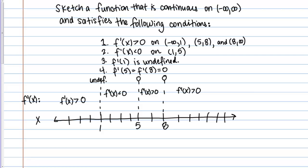This is all the information we know about the first derivative. Now let's translate it into facts about the behavior of the original function. I'll make a new line for 'behavior of F.' Starting with the positive/negative information: the derivative being greater than 0 means the derivative is positive, which tells us the original function is increasing on that interval.